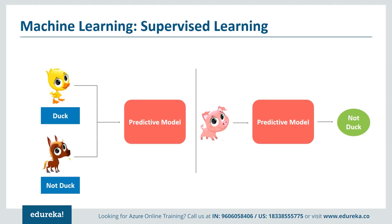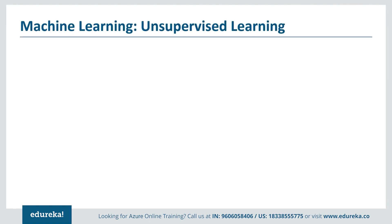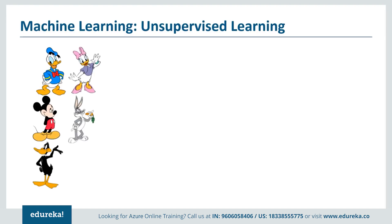An important point in supervised learning is that your data is labeled. You know what your final value is, which is why your data is labeled — you know what you are trying to predict. In contrast, with unsupervised learning, you do not have labeled data, meaning you do not have a final target variable. The final output can be random or vary; it is not consistent and can differ depending upon your needs.